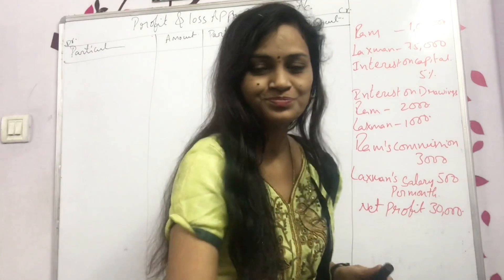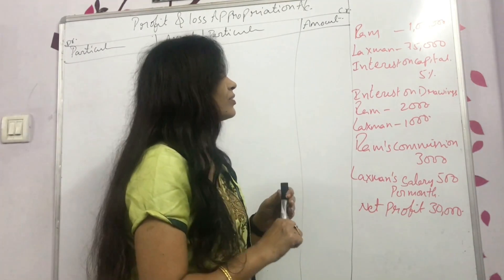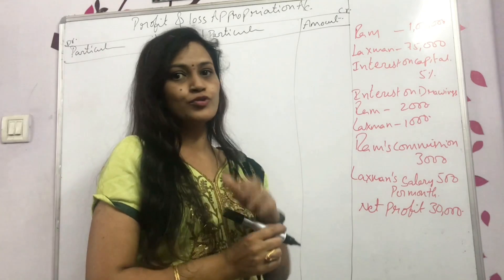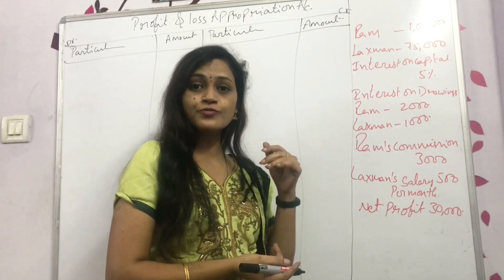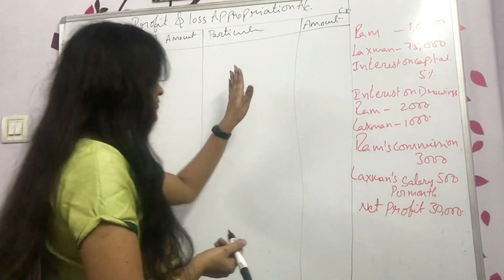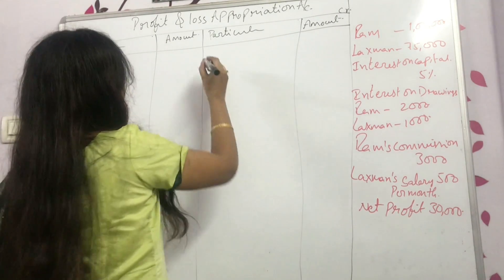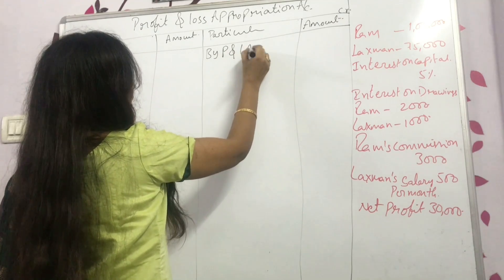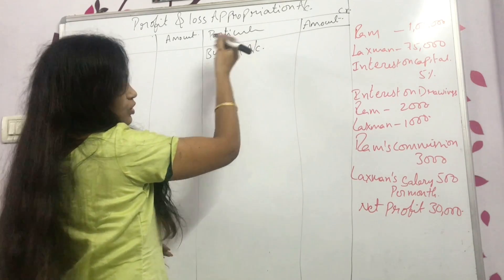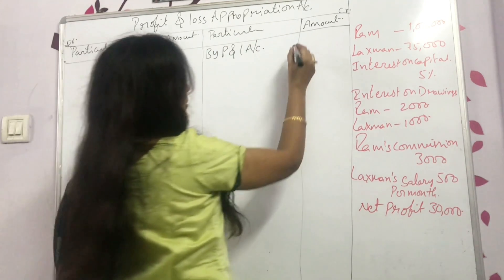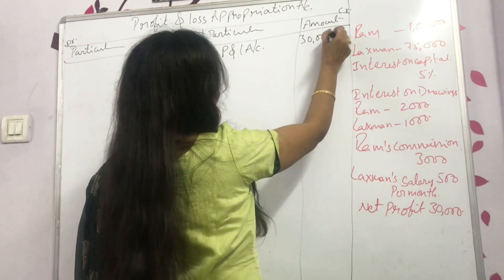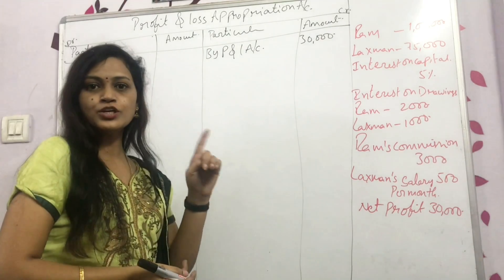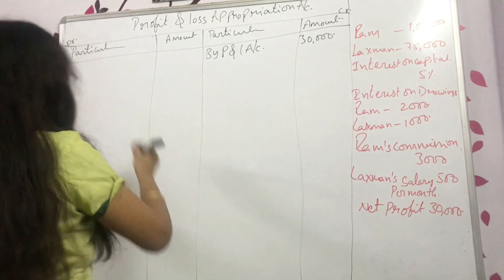Remember the format — according to the format, whatever profit you got, we show it on the credit side. By profit and loss account, the amount is 30,000. Next, immediately write down interest on capital on the debit side.